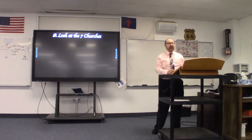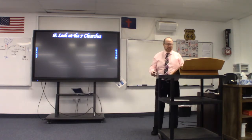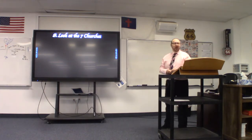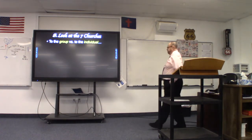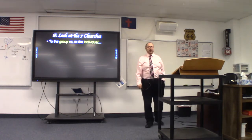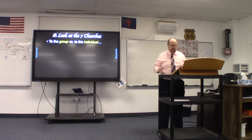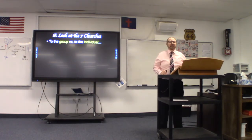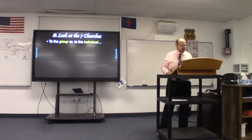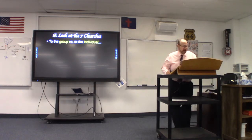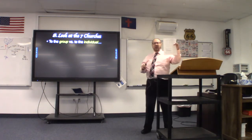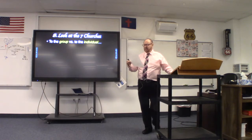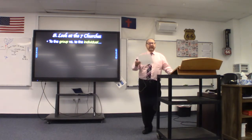We did that in detail, so we will just be surveying — an overview of the seven churches in chapters 2 and 3. One thing we need to understand is that these letters are written to the group, not to any particular individual. They were given to the angel, who sent them to the church. The seven churches are: Ephesus, Smyrna, Pergamos, Thyatira, Sardis, Philadelphia, and Laodicea.